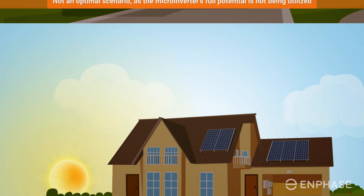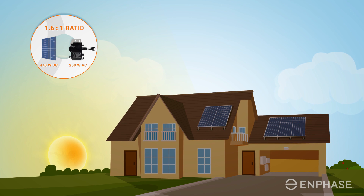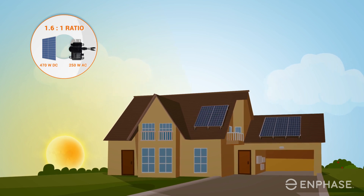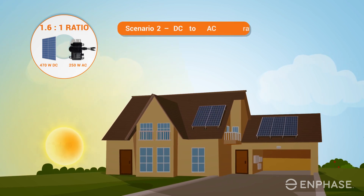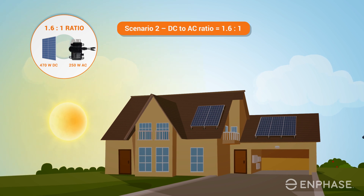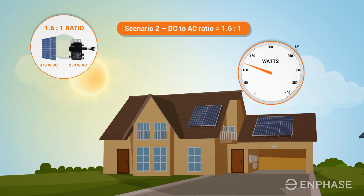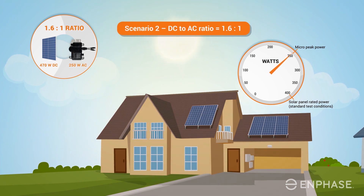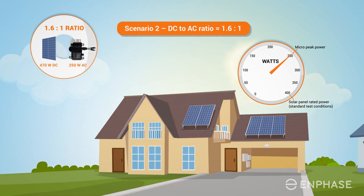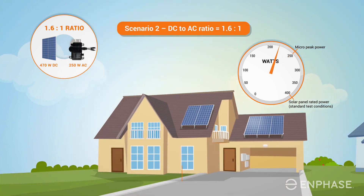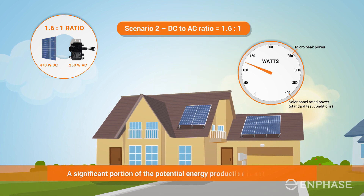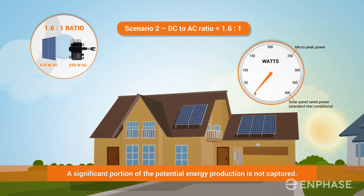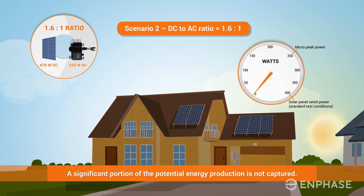With this pairing, the rated power of the solar panel is much higher than the peak power rating of the microinverter. This is a 1.6 to 1 ratio. With such a high ratio, the microinverter reaches its maximum power output frequently, and throughout most of the year a significant portion of the potential energy production is not captured. This, too, is a poor pairing choice.